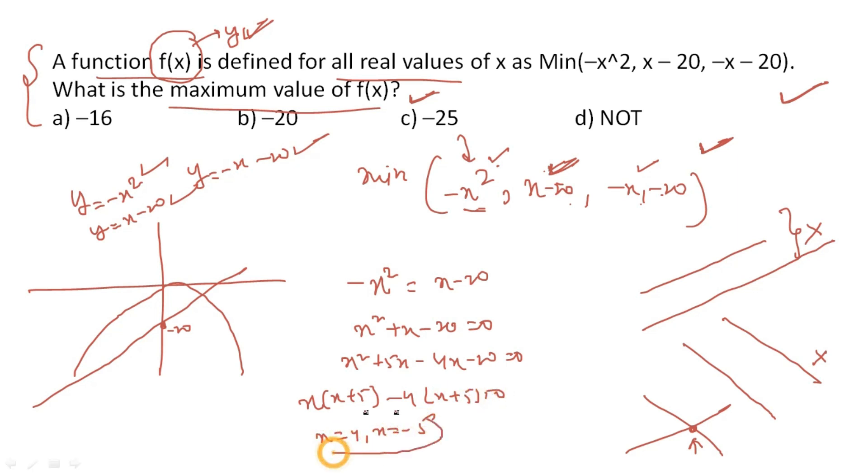The second equation is untouched. This equation has positive slope and this has negative slope. Now equating them: x minus 20 equals minus x minus 20. This gives 2x equals 0, so x equals 0.